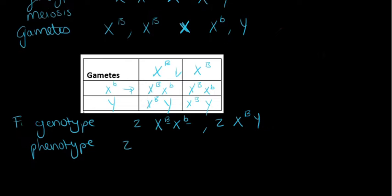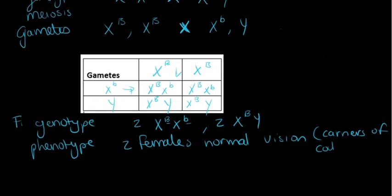So phenotype, you can say two females normal vision. If you want to be a bit extra you can just say carriers of color blind allele. And then two males normal vision.